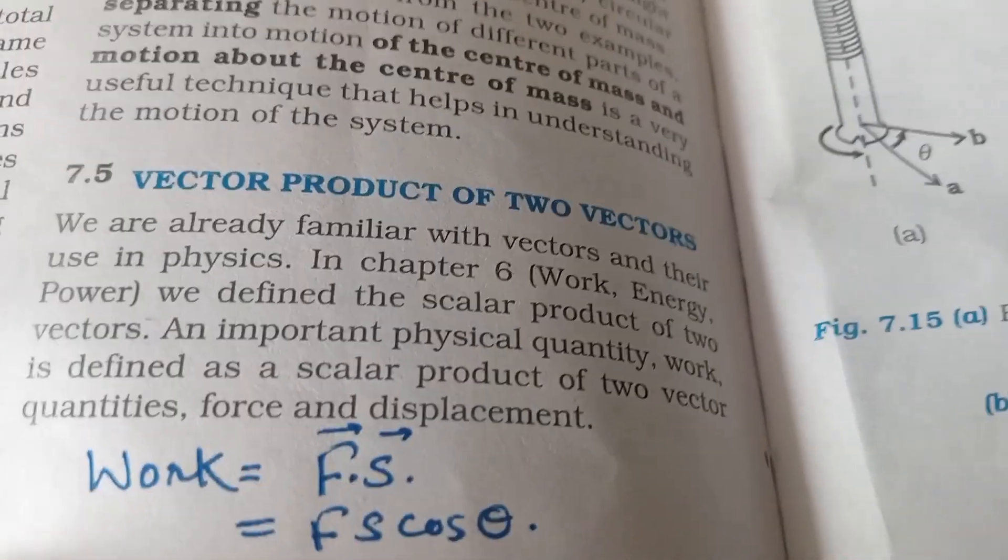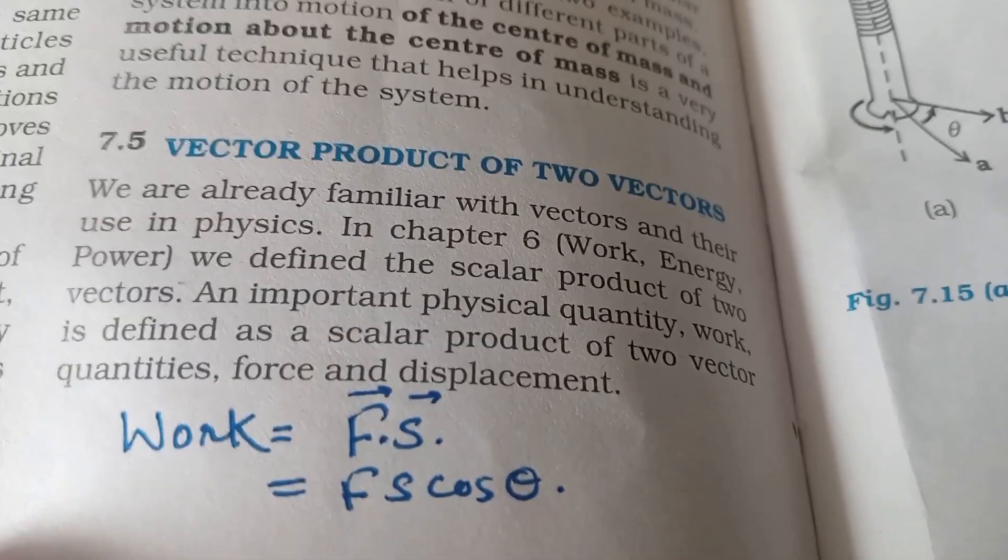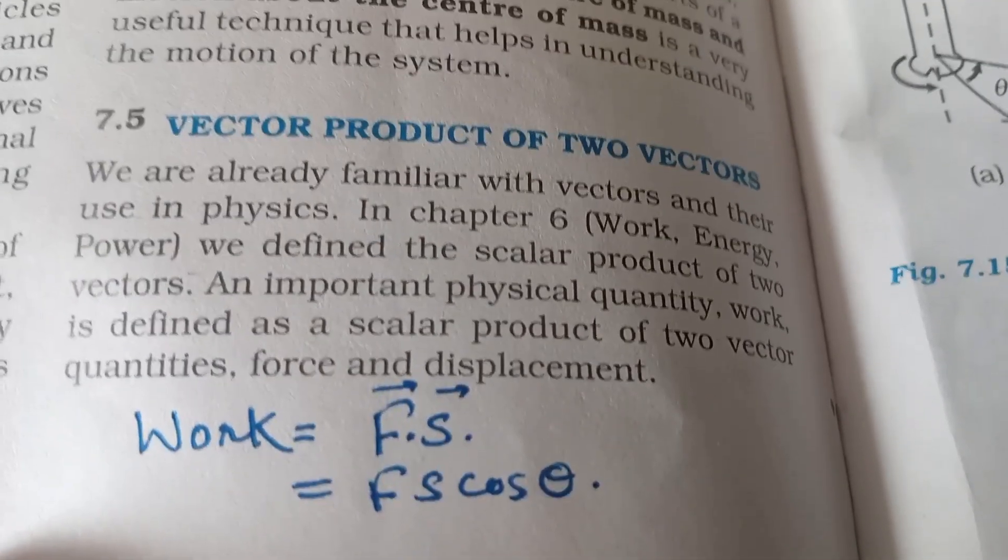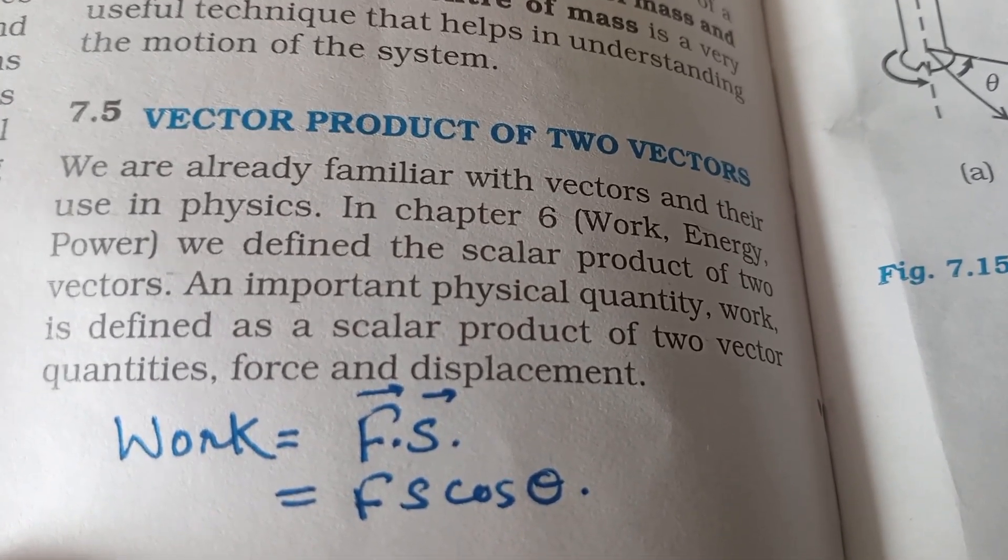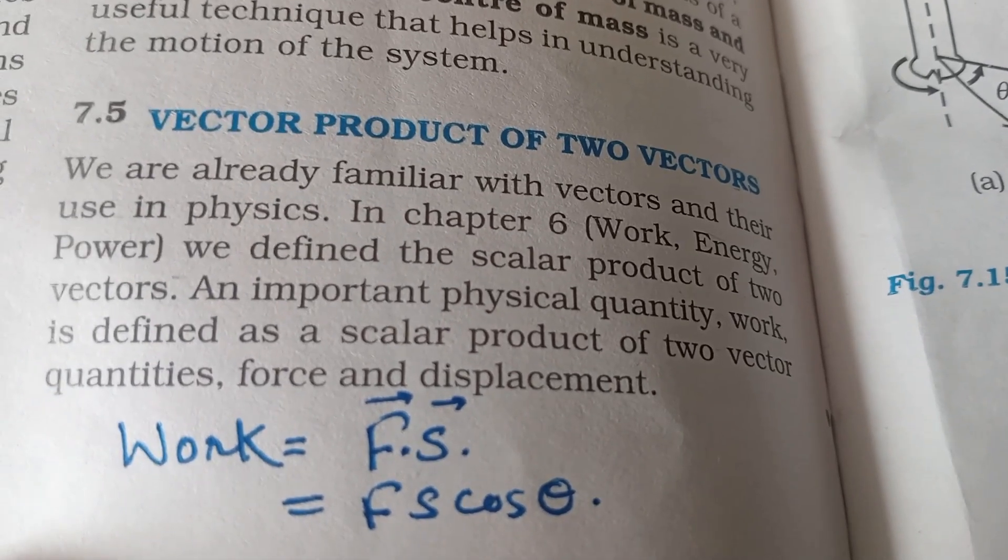We are already familiar with vectors and their use in physics. In chapter 6, we defined the scalar product of two vectors. An important physical quantity, work, is defined as a scalar product of two vector quantities, force and displacement.